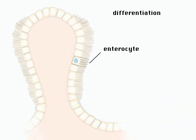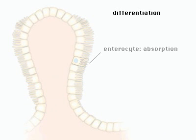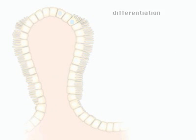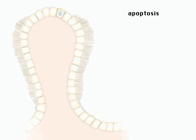The enterocyte, covered by a dense carpet of microvilli, functions in nutrient absorption. At the tip of the villus, the cell undergoes programmed cell death, also called apoptosis, and is sloughed from the intestinal lining.